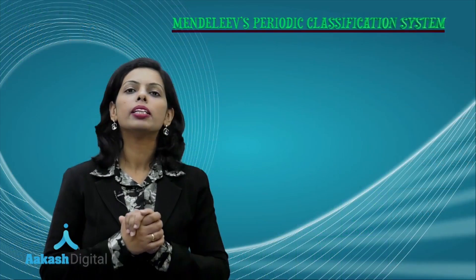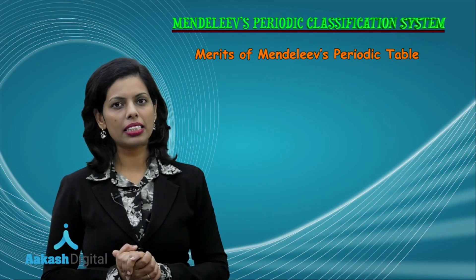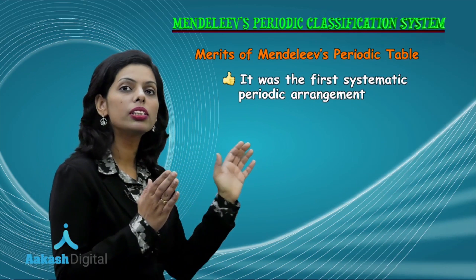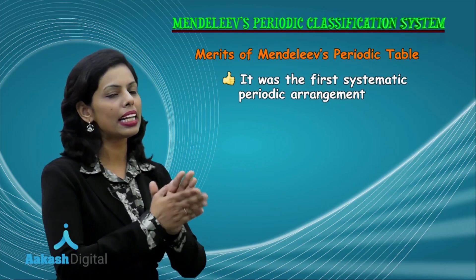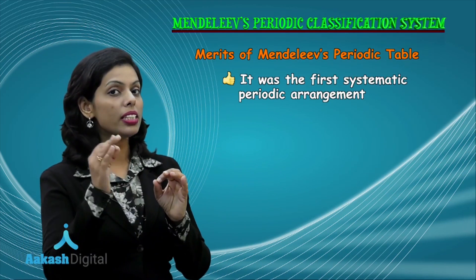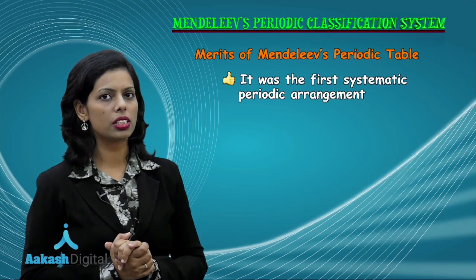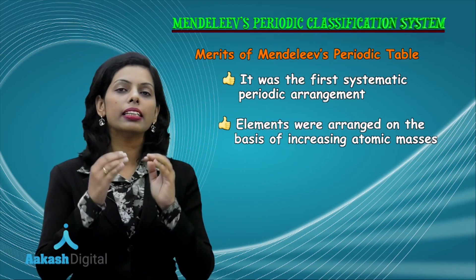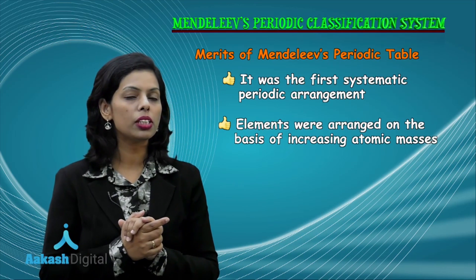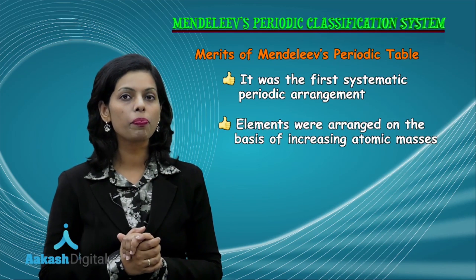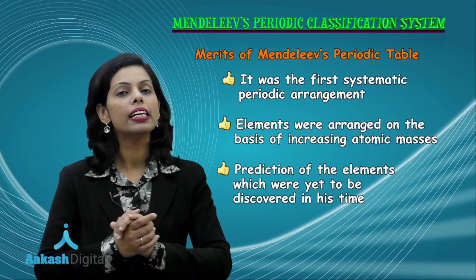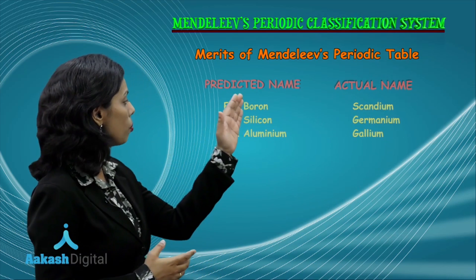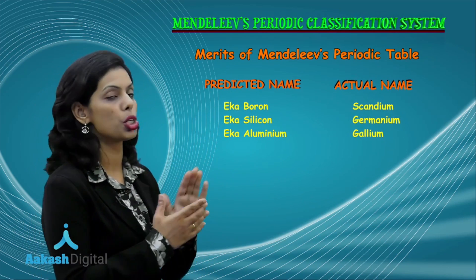Then we discussed the merits of Mendeleev's periodic classification system. The first merit was that it was a systematic classification system — even the first systematic classification system. Elements were arranged on the basis of increasing atomic masses. He also predicted certain new elements which were not present in his time, like eka boron, eka silicon, and eka aluminum.